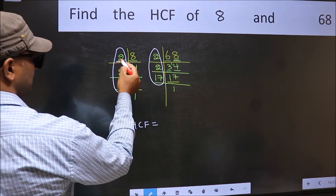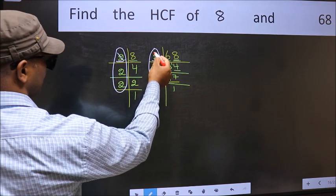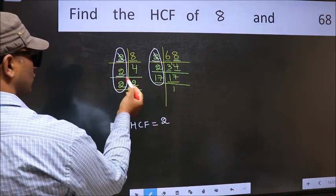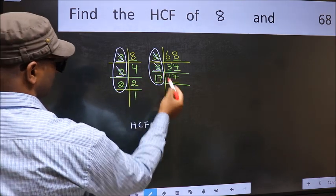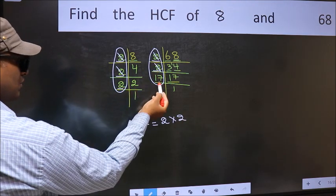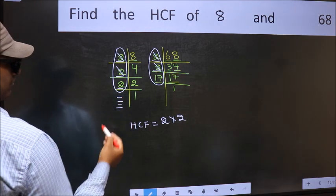So now let us find the numbers which should be present here and here. Starting with the number 2. Do we have 2 here? Yes. So cut 2 right here. Next number 2. Do we have 2 here? Yes. So cut 2 right here. Next number 2. Do we have 2 here? No. No more numbers have been left out.